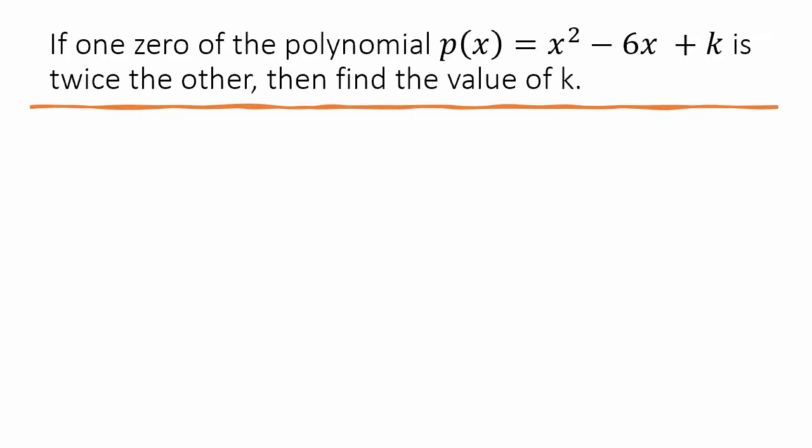The question is: if one zero of a polynomial p(x) = x² − 6x + k is twice the other, then find the value of k.